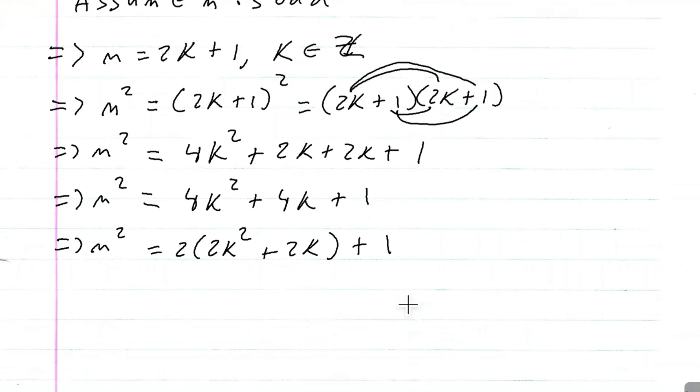We know that 2k squared plus 2k is an integer. So m squared is of the form 2 times an integer plus 1. This implies m squared is odd.